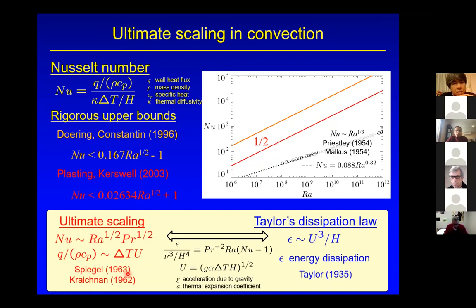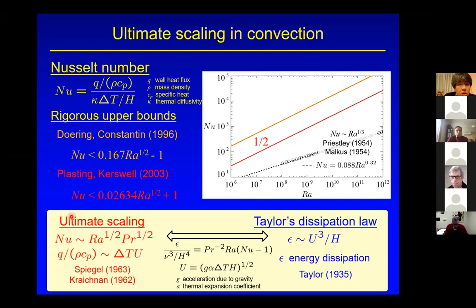This ultimate scaling has been suggested by Spiegel and Kraichnan for extremely high Rayleigh number. However, what we observe in reality is classical scaling at extremely high Rayleigh number. In this configuration we have an energy budget equation relating energy dissipation rate and buoyancy power including the Nusselt number. This relation tells us that ultimate scaling is equivalent to Taylor's dissipation law, where epsilon is independent of viscosity, and U is the buoyancy-induced terminal velocity and H the flow height of the fluid layer.